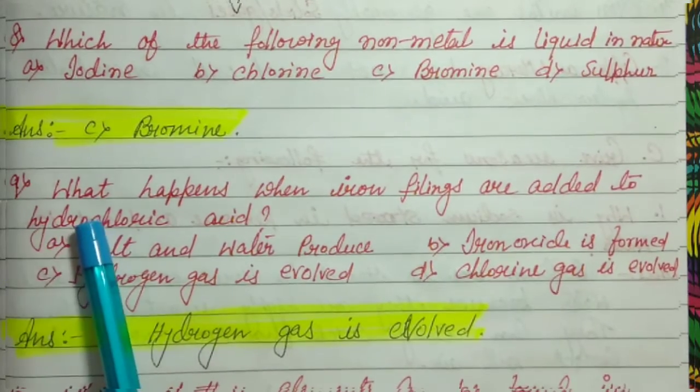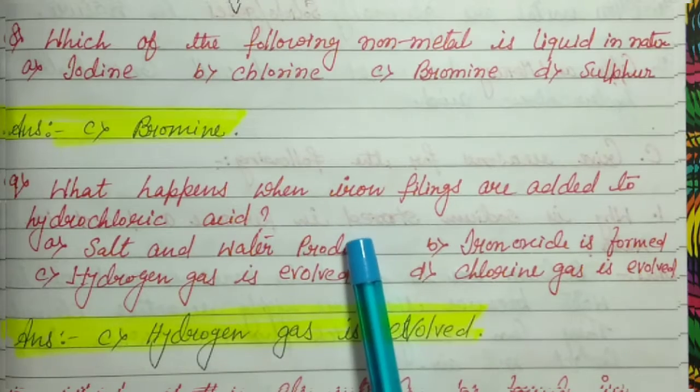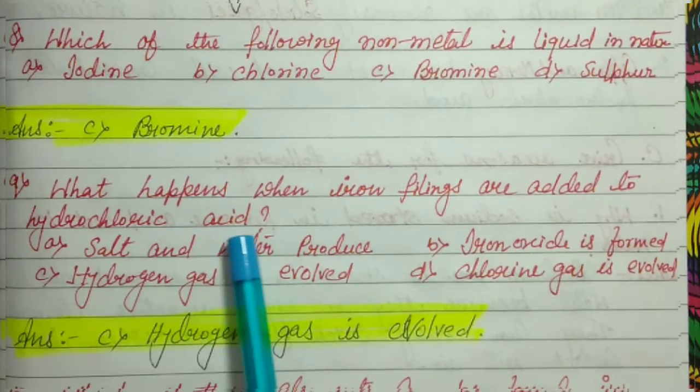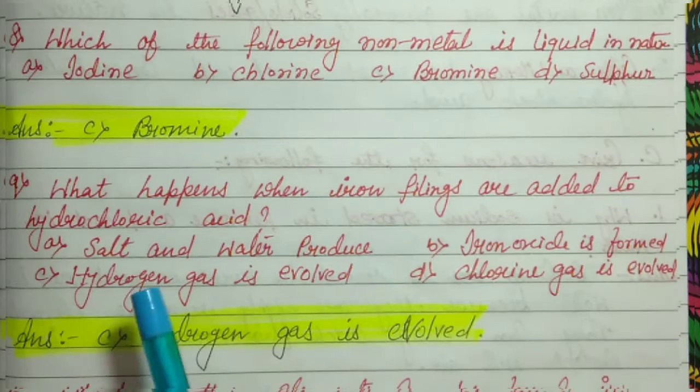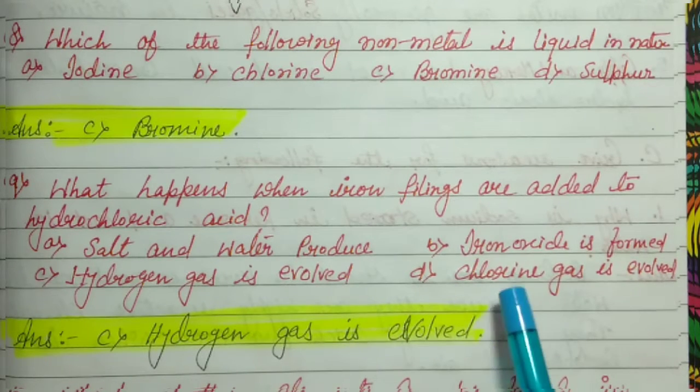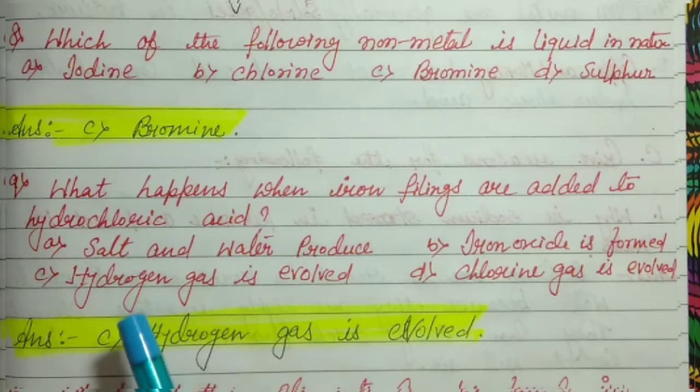Question number 9: What happens when iron filings are added to hydrochloric acid (HCl)? The options include: salt and water produced, iron oxide is formed, hydrogen gas is evolved, or chlorine gas is evolved. Iron (Fe) reacts with HCl and after the reaction, hydrogen gas is evolved. The right answer is hydrogen gas is evolved.